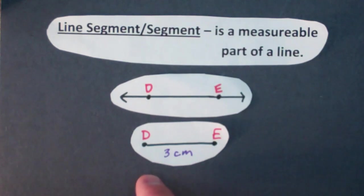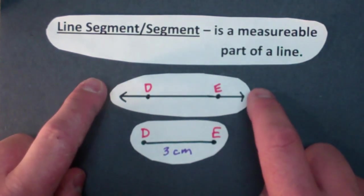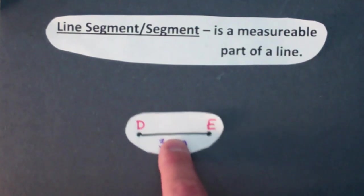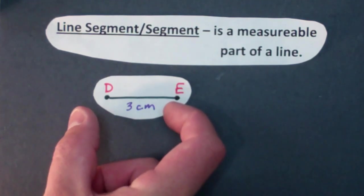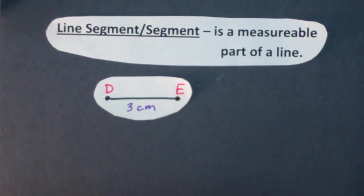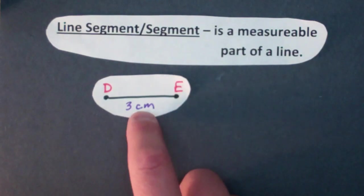So a line segment has no arrows whereas a line does have arrows. So I'm going to get rid of this line DE and just focus on line segment DE. It's a measurable part of a line. I can physically put down a ruler here and measure a line segment. And this one just happens to be three centimeters.